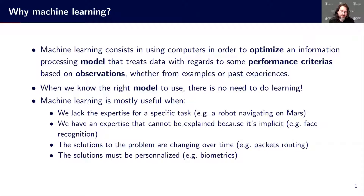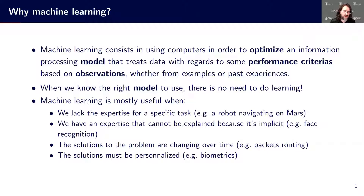Another case is when we have access to problems which are changing over time. So if we are in a dynamic environment where conditions are changing, we may not be able to specify everything beforehand. Machine learning can be useful to adapt automatically the system to the current working conditions. Or if we have some solutions that need to be personalized — for example, in biometrics, if we want to control access to some devices or some environment based on fingerprints or faces, we don't know in advance who will get access. We need to be able to add new grant accesses to new persons, and that can be done with machine learning.